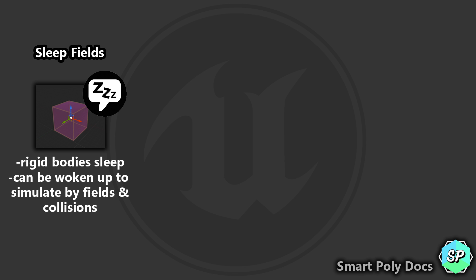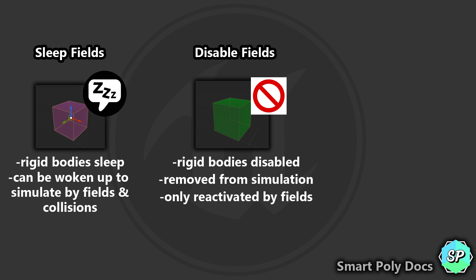Next up we have disable fields. Disable fields also define a specific region of space to disable rigid bodies in that space. Disabled rigid bodies are completely removed from the simulation, and once removed they can be reactivated only by fields — not by collisions like the sleep field.